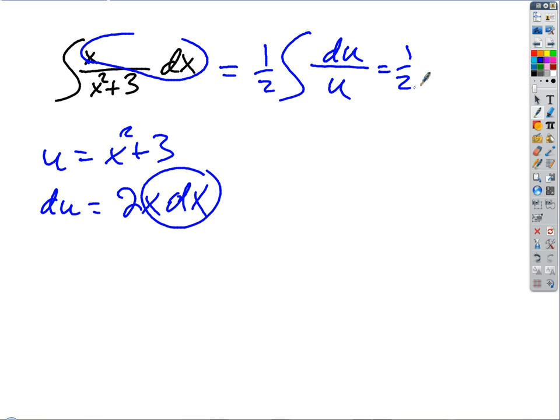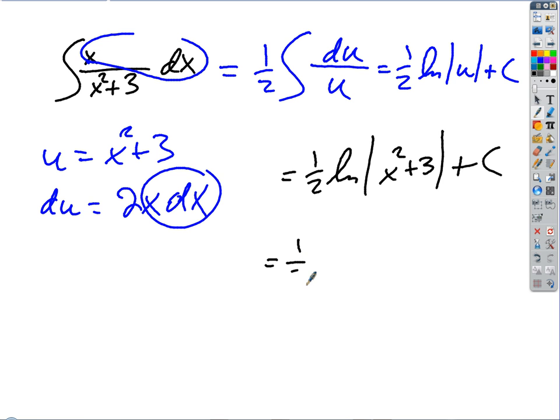So there's our one-half natural log of the absolute value of u plus c. Reverse the substitution, and we got it. U is x squared plus 3. Do I need the absolute values there? I don't. How come? Because x squared plus 3 is positive value. This is x squared is non-negative. So we know that I can do away with those. I can just write it instead as a quantity x squared plus 3. We got it. That's our rule.